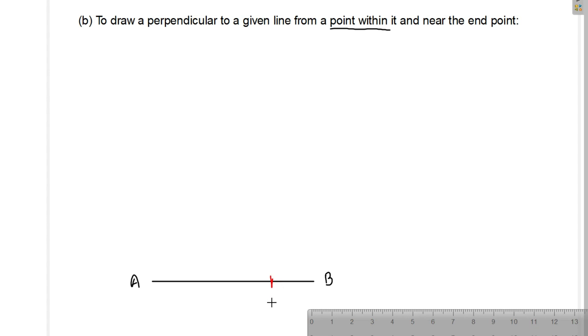So this is the point C that we will mark. Now from this given C point we have to draw a perpendicular line to the line A, B. So here what we will do,